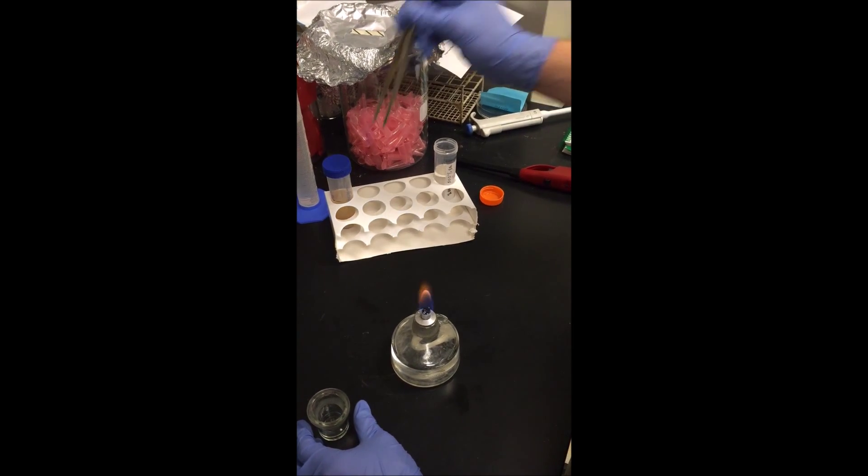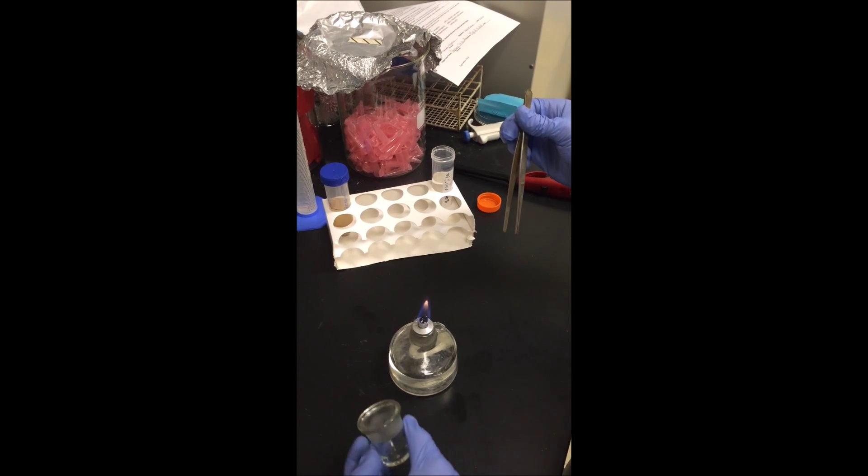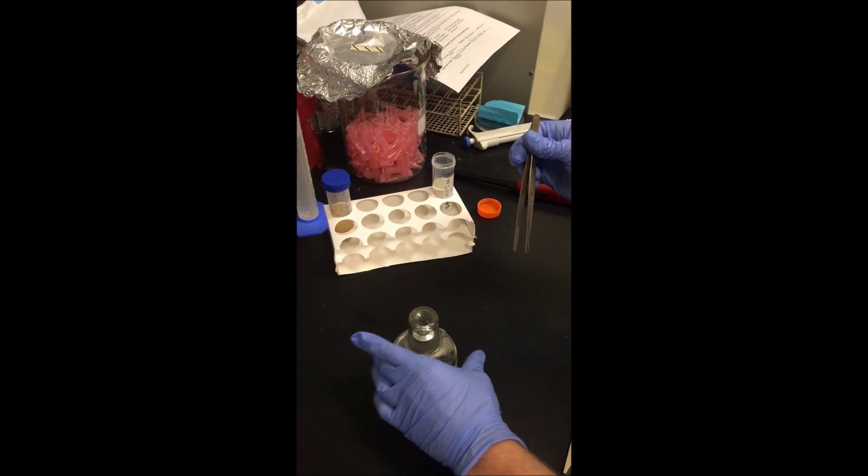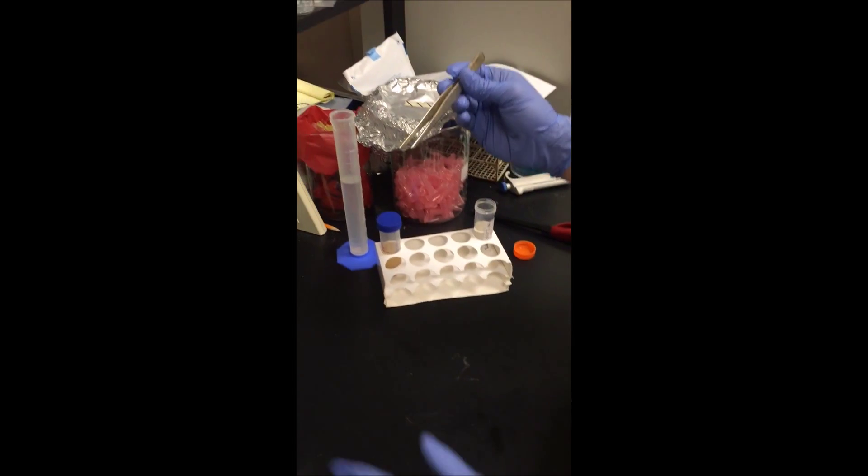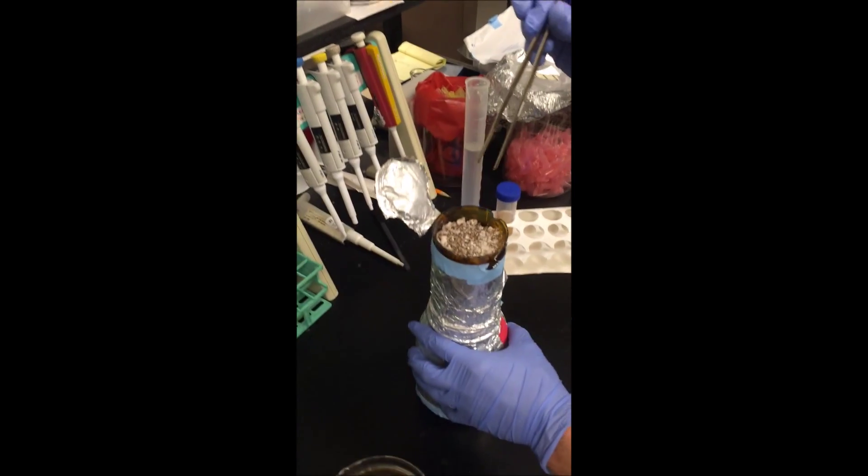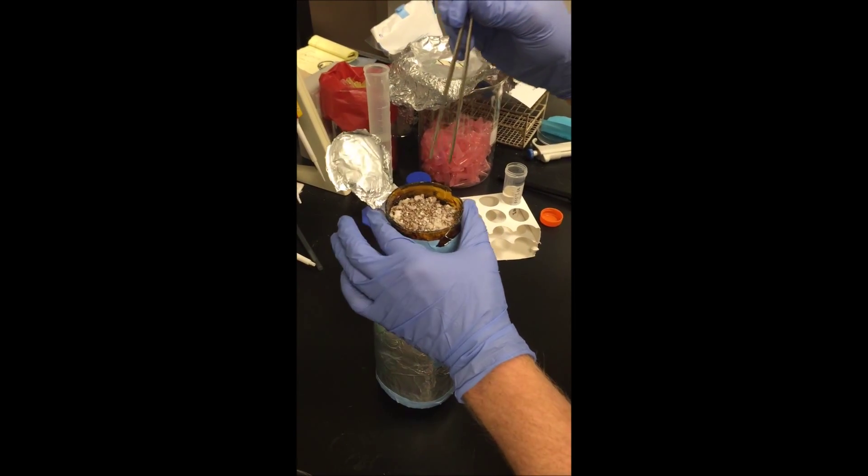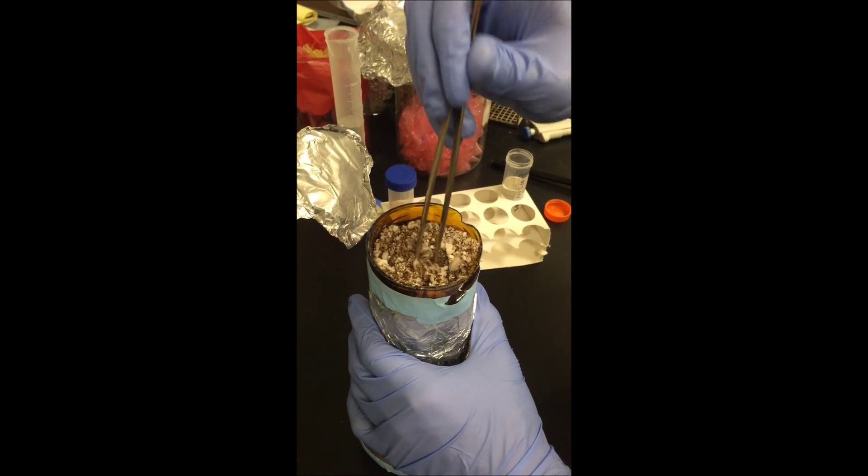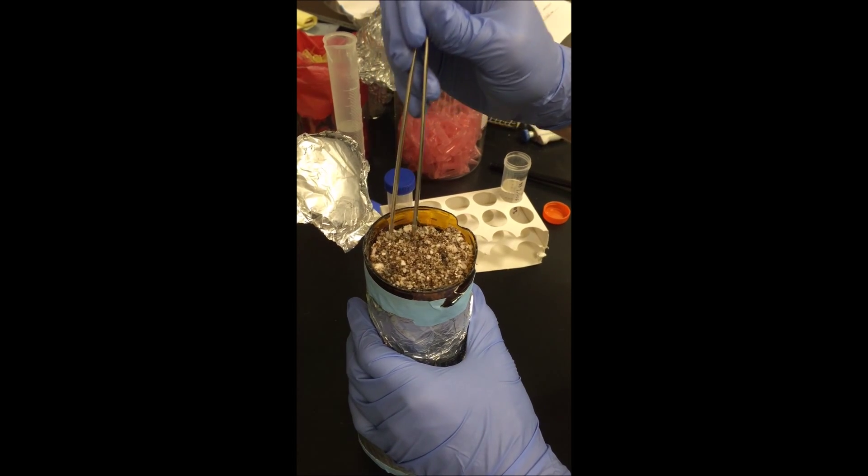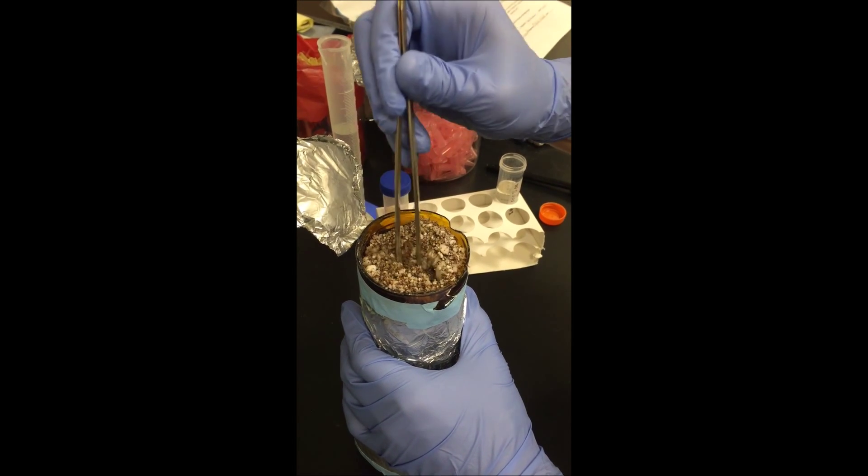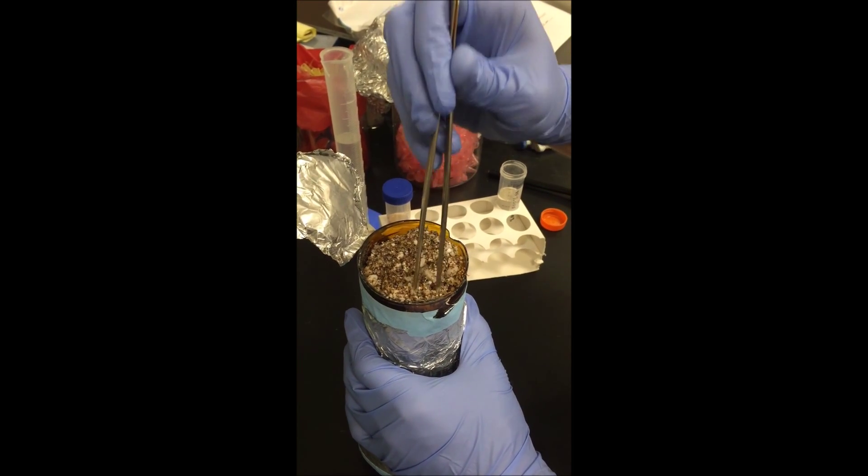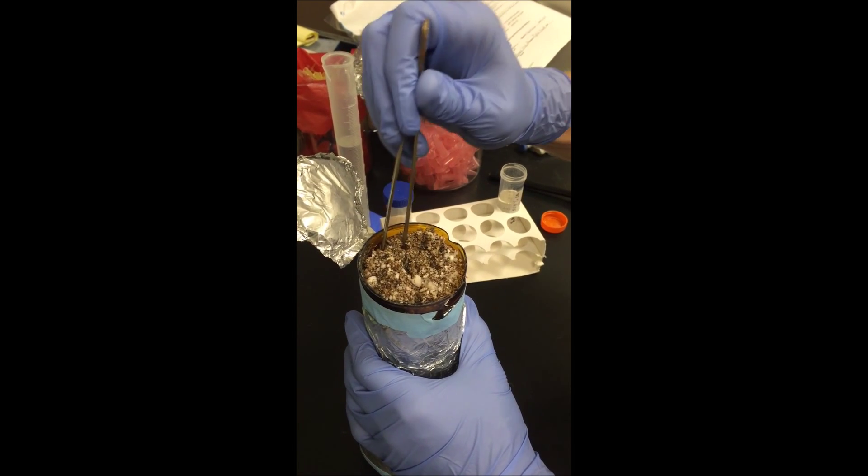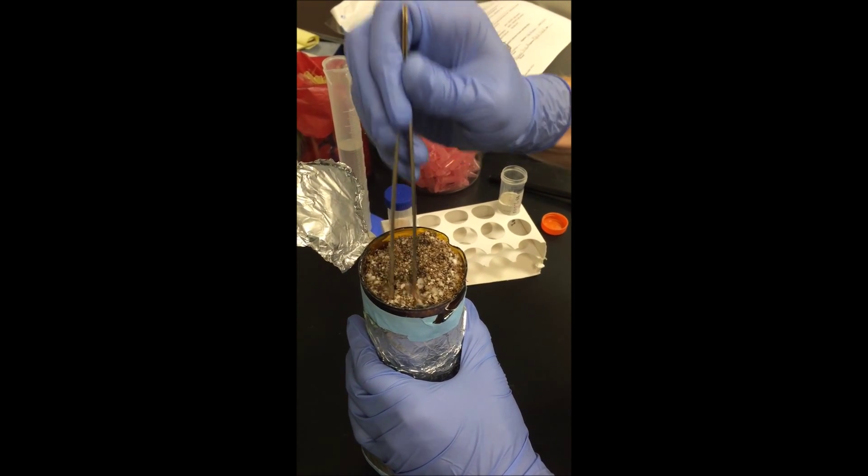Since we are only using one sample, I can go ahead and extinguish this flame. Move that to the side. Using your sterilized tweezers, you're going to take your liner jar with the soil on top and you're going to break it up. This is just going to make it easier for you guys to plant in just a second here. So get a nice, loose soil mixture here.